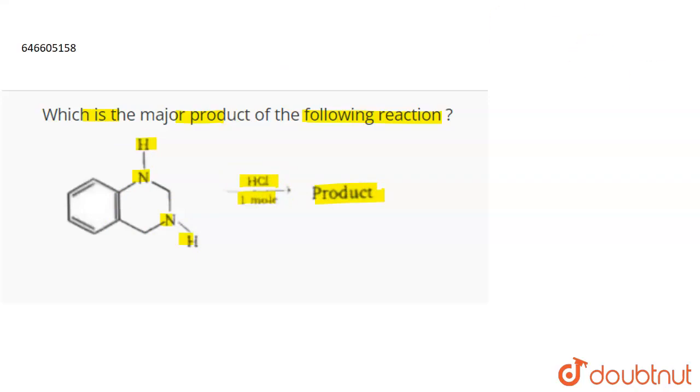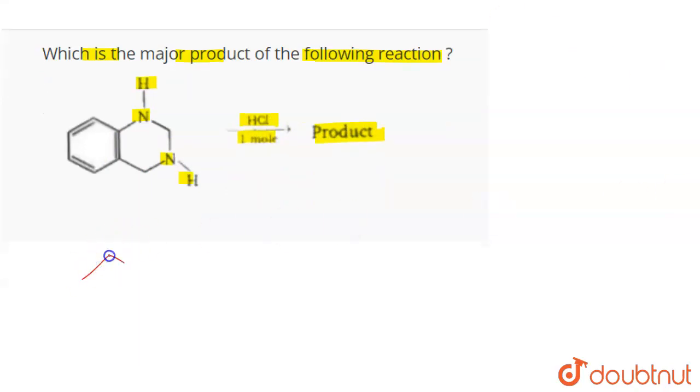So the compound that is given to you is this. This is NH, then again NH, and this.